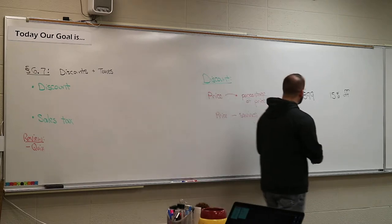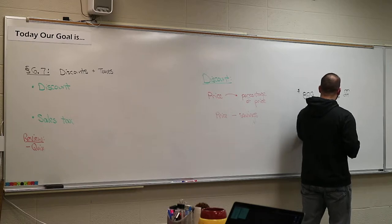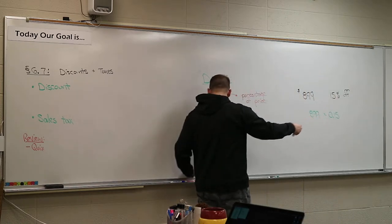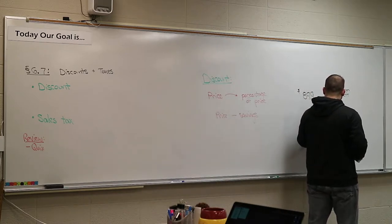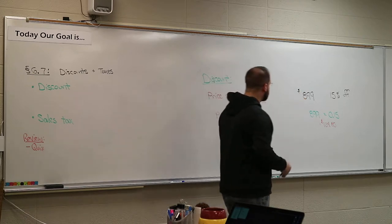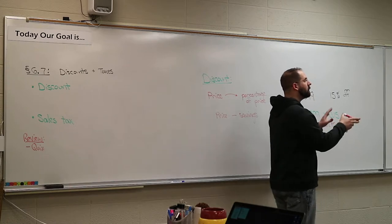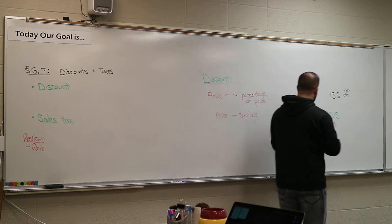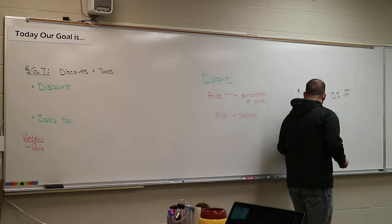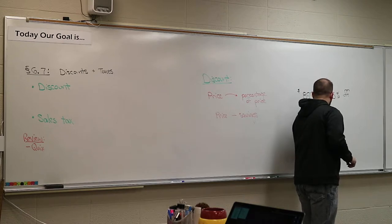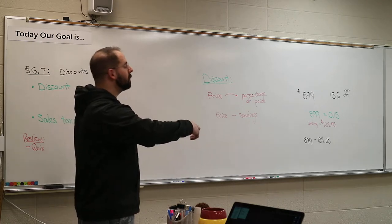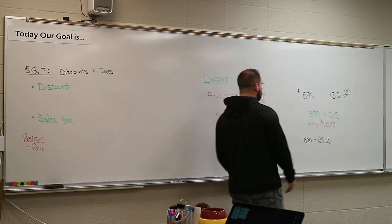To figure out that discount, you take $899 and multiply it by 0.15 — because you change the percent to a decimal. That gives you what you're going to save. The answer is $134.85, which is almost exactly what they said they'd take off. So that $134.85 is my savings on that phone.